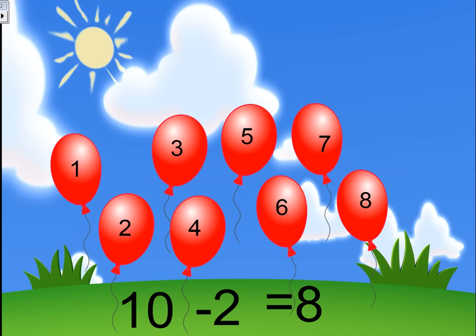We say this equation by saying ten minus two equals eight, or ten subtract two equals eight, or ten take away two equals eight. We had ten balloons, two flew away, so we ended up with eight.